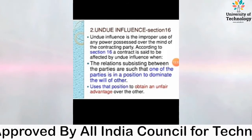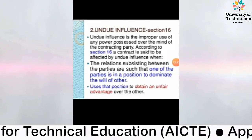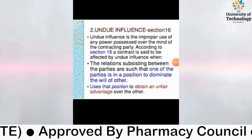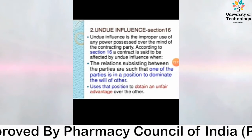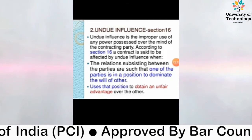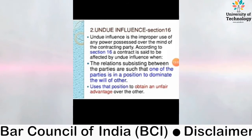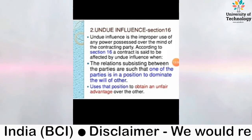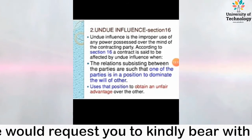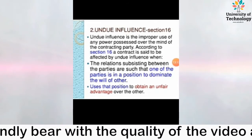Undue Influence is the improper use of any power possessed over the mind of the contracting party. According to Section 16, a contract is said to be affected by undue influence when the relations subsisting between the parties are such that one of the parties is in a position to dominate the will of the other, and uses that position to obtain an unfair advantage over the other.